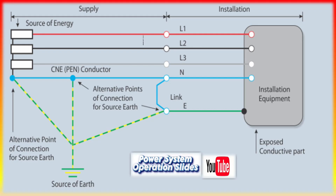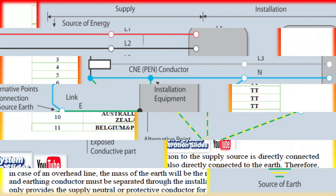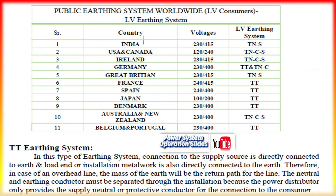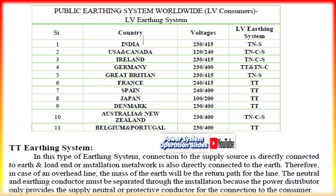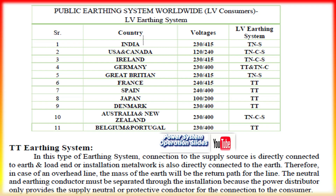TNCS (combined-separated) configuration: the TNCS system is a hybrid. Near the supply source, a combined PEN conductor is used, but at a certain point — often at the service entry — it splits into separate PE and N conductors for the remainder of the installation. This configuration provides the economic benefits of a combined system for the bulk distribution while ensuring that the final run to the consumer is safer due to the separation of the protective functions.